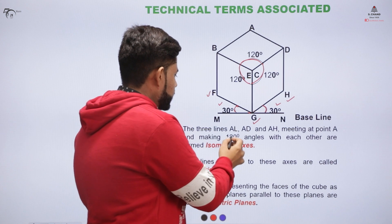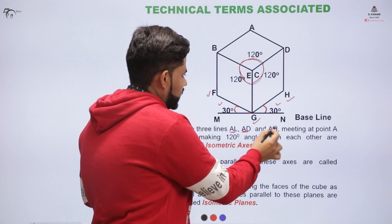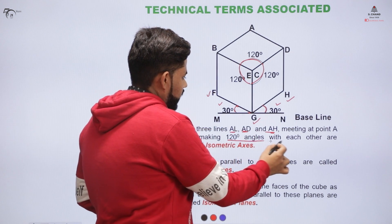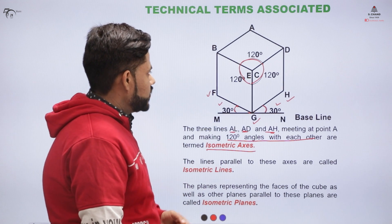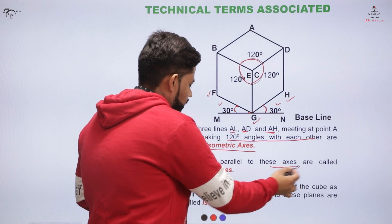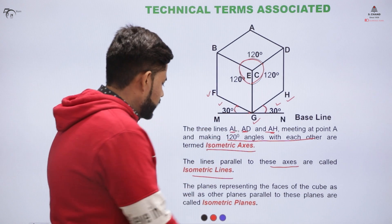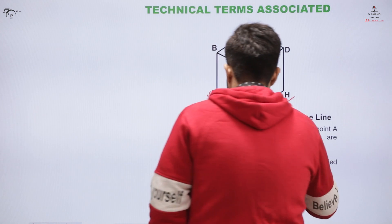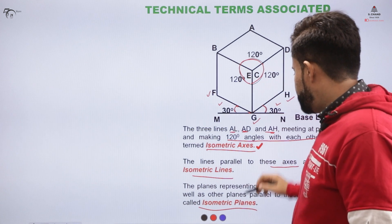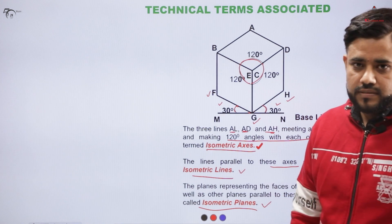There are three lines visible in the diagram: AL, AD, and AH. These all meet at a common point and make angles of 120 degrees with each other — these are called isometric axes. Lines that are parallel to these isometric axes are called isometric lines. The planes that these lines represent are called isometric planes. So: lines inclined at 120° to each other are isometric axes, parallel lines are isometric lines, and the resulting planes are isometric planes.